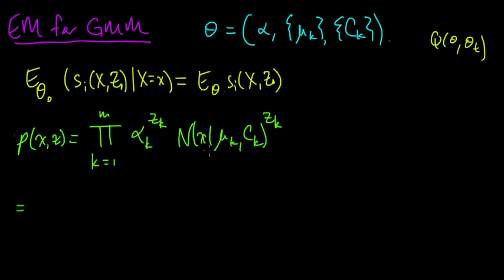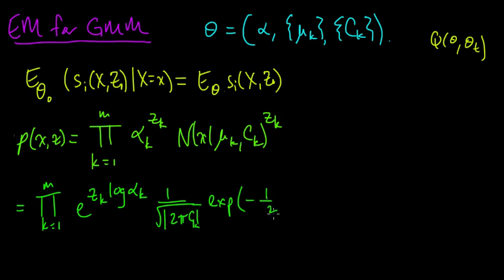To get it to look like an exponential family, we want to get stuff up in an exponent. We want it to get like e to the something, and we want it to look like a dot product between the variables, or some functions of the variables, and some functions of the parameters. Let's make this look like e to the something. We can write, because alpha_k equals e to the log alpha_k, this equals e to the z_k log alpha_k. Let's now write the definition here of the normal density: 1 over the square root of the determinant of 2 pi c_k, e to the minus 1/2 (x - mu_k) transpose c inverse (x - mu_k).